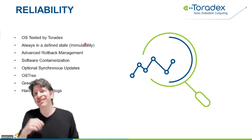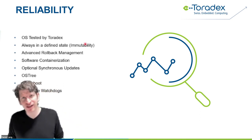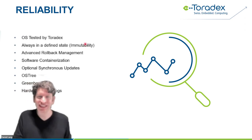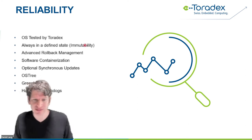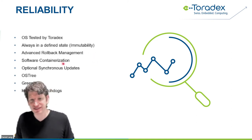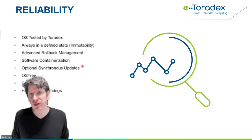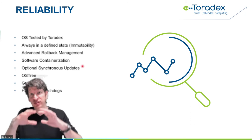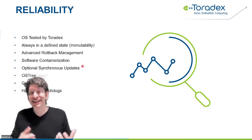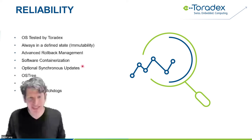We have an advanced rollback system: if anything goes wrong — someone disconnects the USB stick at the wrong moment, pulls power, or there's an application issue — we can roll back to a known good state, either A or B, so your device is still working and you can try to update again. We use software containerization by default, which helps with frequent application updates because containers package all dependencies, making it much less likely to break another application and reducing dependency on the exact OS version.